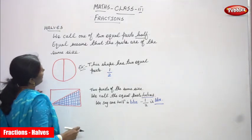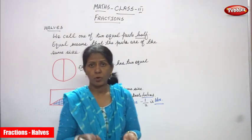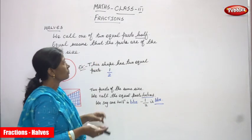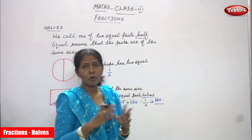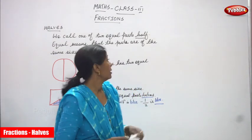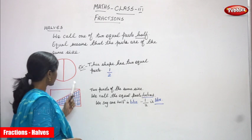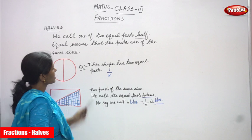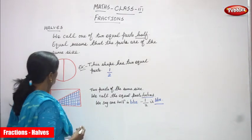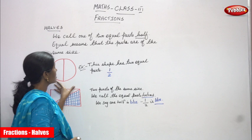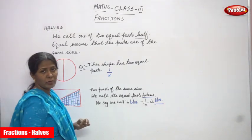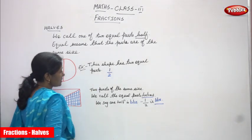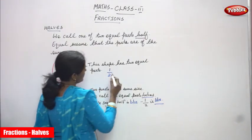We call one of the two equal parts 'half'. Equal means that the parts are of the same size — all two parts are the same size, that is called as equal. For the next example, I draw a circle and cut it into equal halves. This shape has two equal parts. If I take only one part — total parts are two — we write it in fraction as 1 by 2. That is called as half. So 1 by 2 we can call it as half.